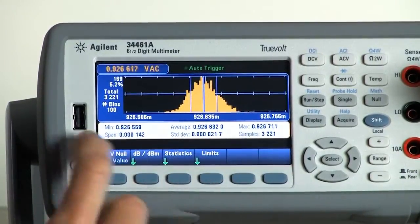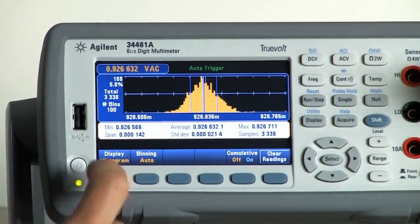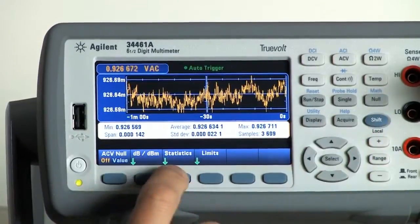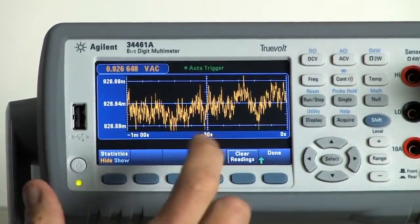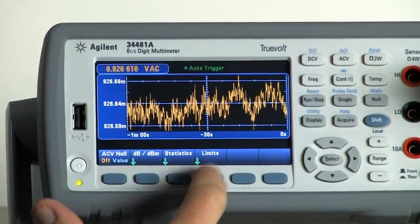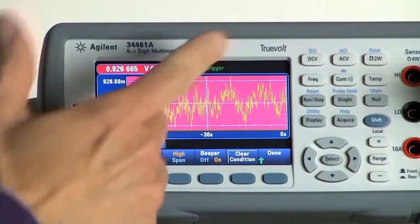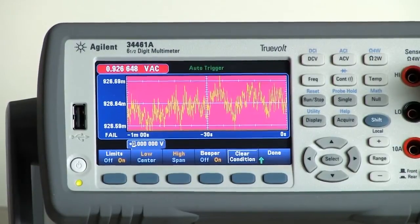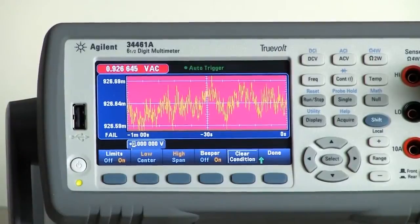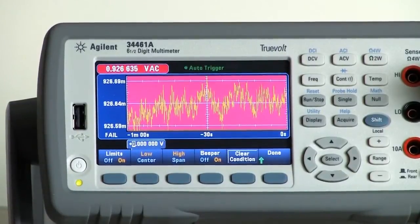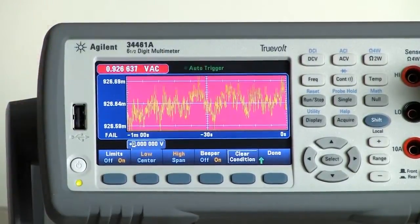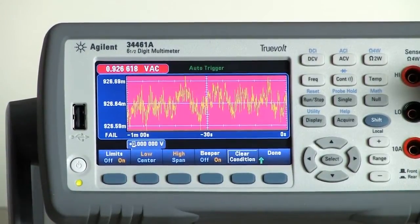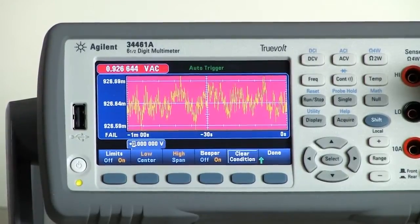Or for example, if you are in the trend chart mode, you can choose to set limits. I'm going to shut the statistics off and I'm going to choose to turn on limits. So for example, the way my limits are currently set, the readings are all out of the range that I want them. And so it will show you visually. And you can also choose to have a beeper off or on so you can be notified audibly if there is an issue with where your readings are based on your chosen limits.